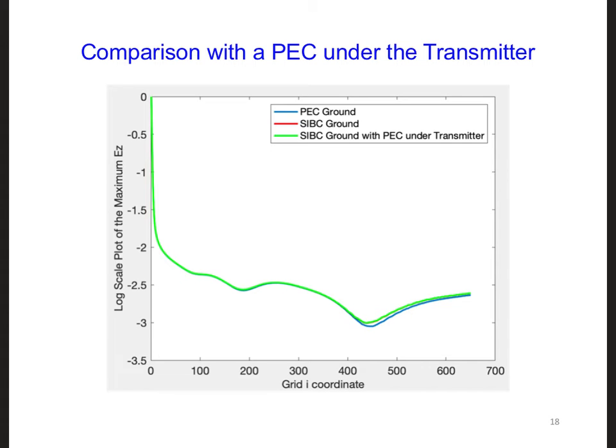Remember how we talked about VLF transmitters having counterpoises under them? I reran my simulation so that there is a PEC under the transmitter for one cell, and then SIBC beyond that for the rest of the grid.